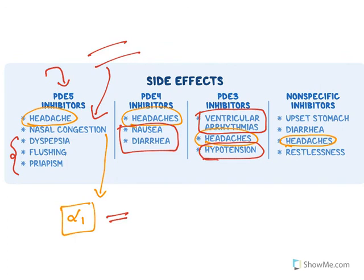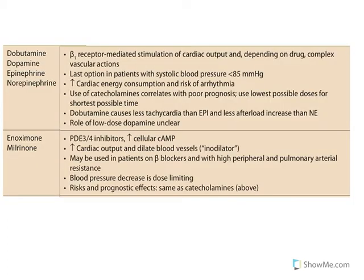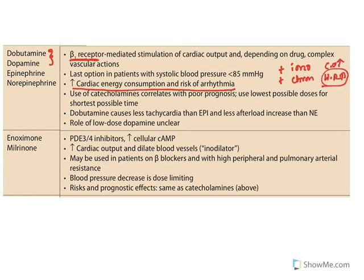The most commonly used beta agonists are dopamine and dobutamine. They activate the beta-1 receptor but increase cardiac energy consumption and raise the risk of arrhythmias. Beta agonists are both positive inotropic and positive chronotropic agents — they increase heart rate as well as cardiac output. The increased heart rate raises energy demand, which can result in arrhythmias. This is an advantage of digitalis, which reduces energy demand while still increasing cardiac output.